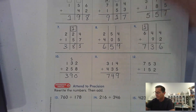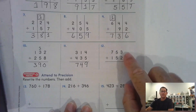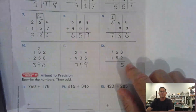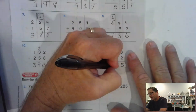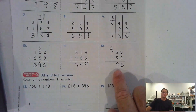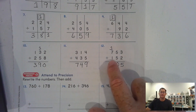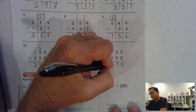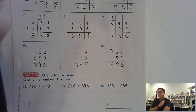Number twelve: three and two ones is five ones. Five and five tens is ten tens — regroup that as one hundred and zero tens. Add the hundreds: seven and one hundred, plus the regrouped hundred, gives us nine hundred.